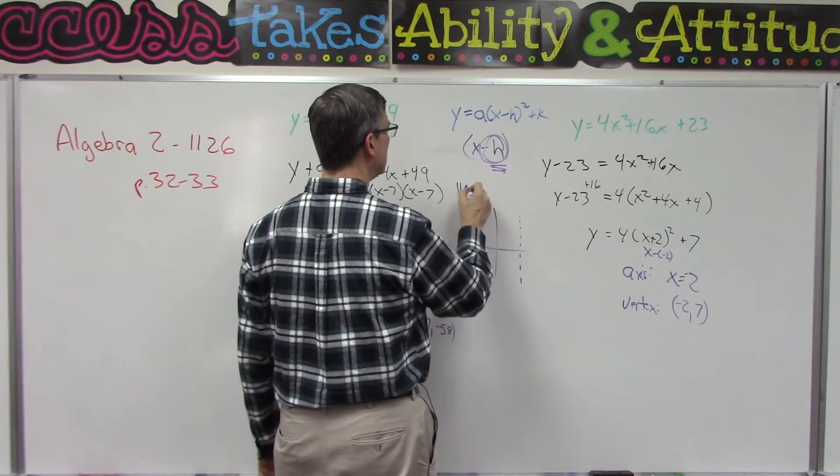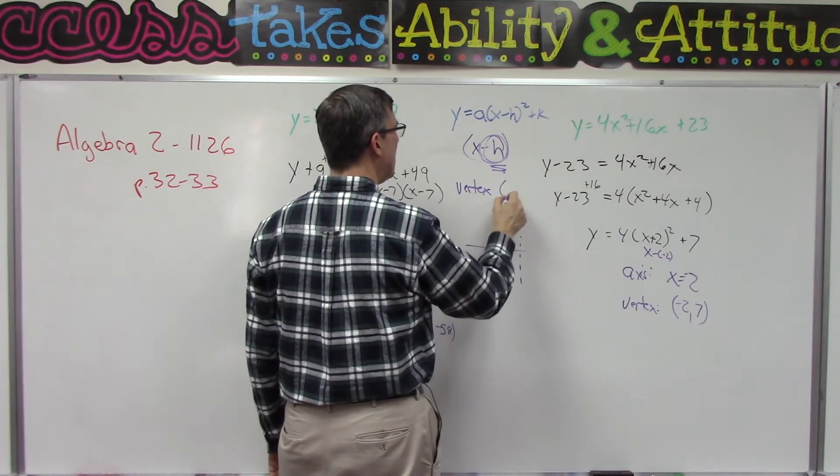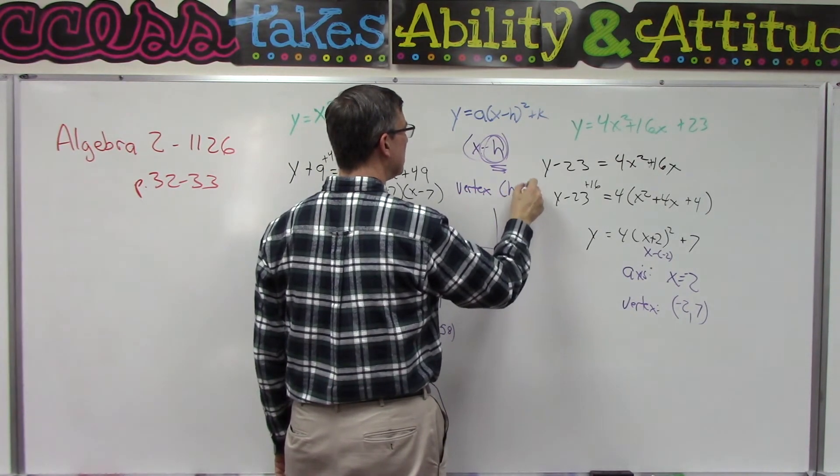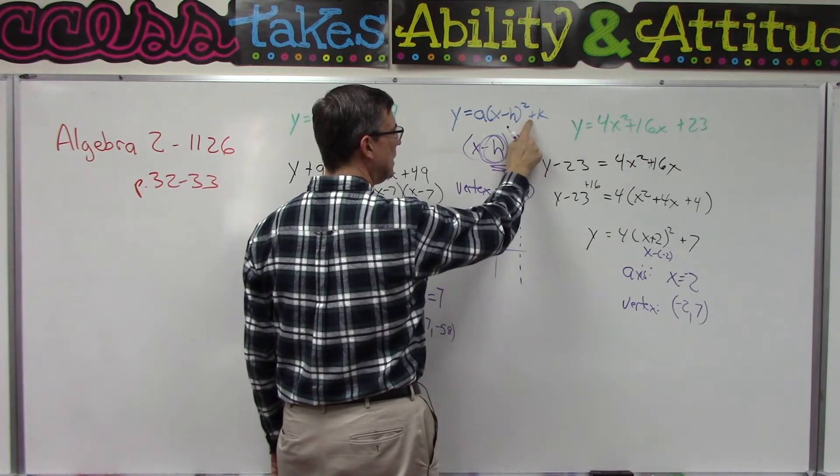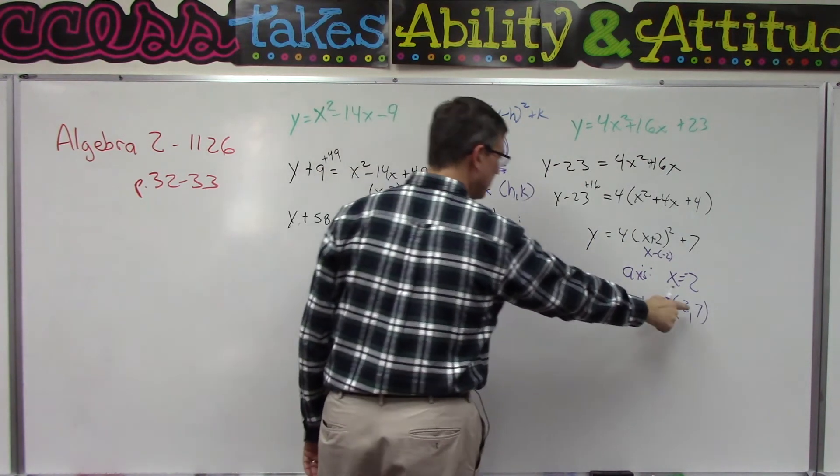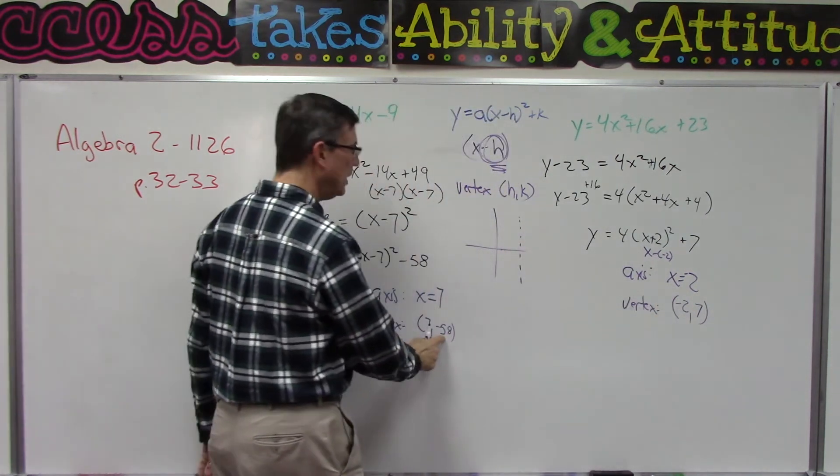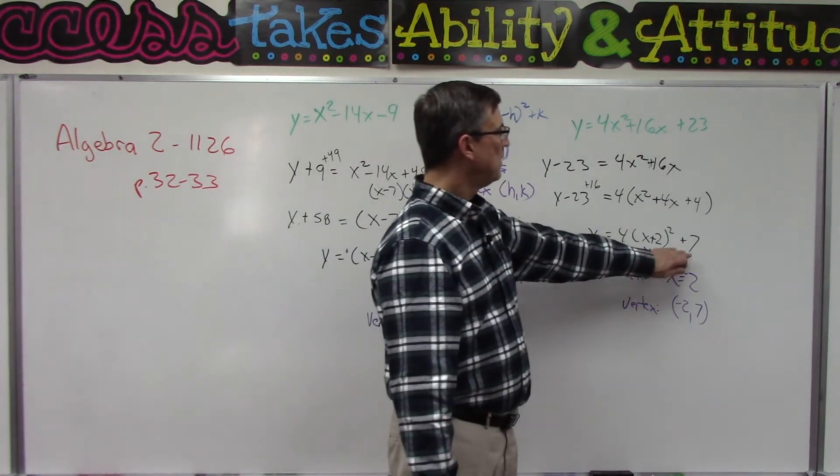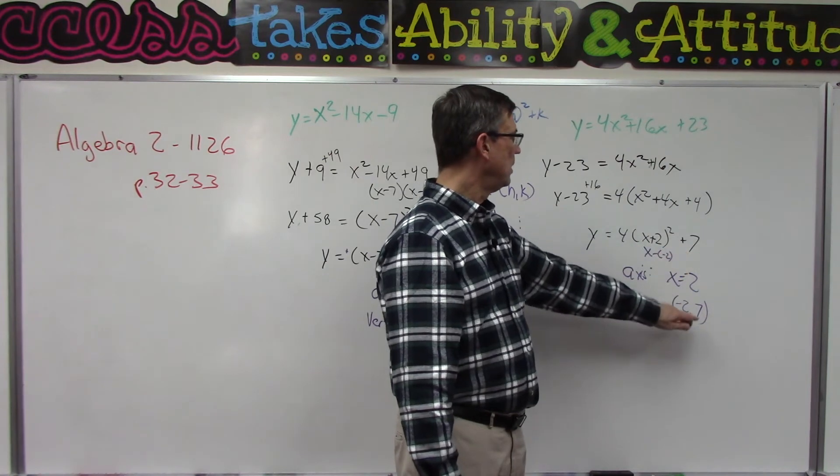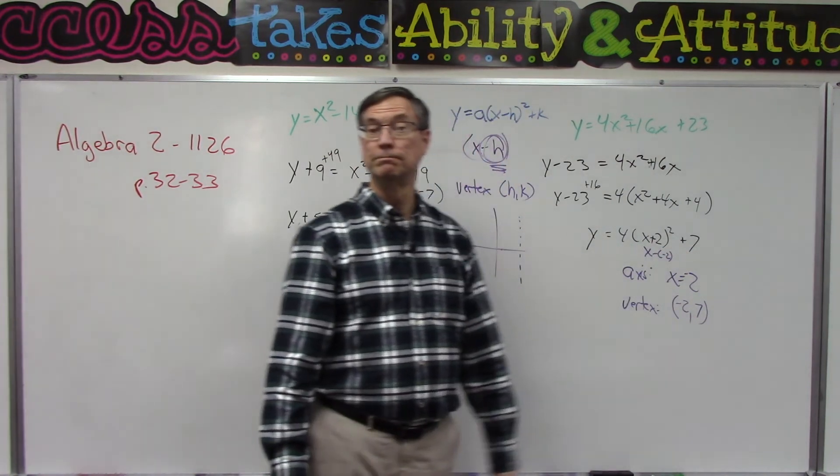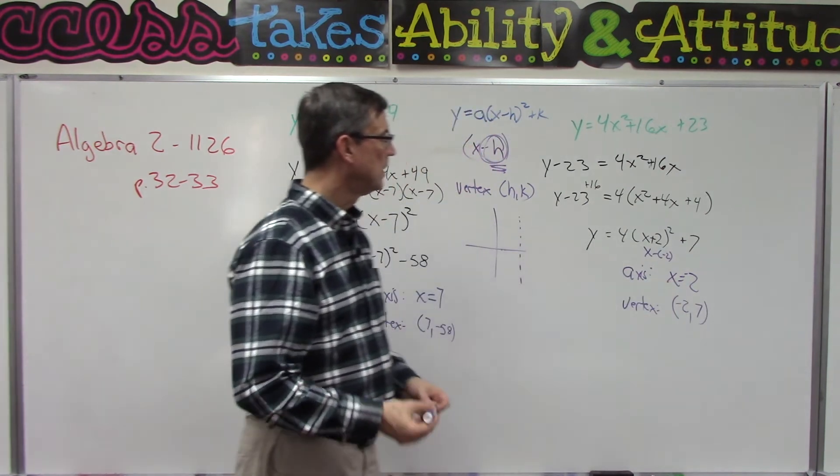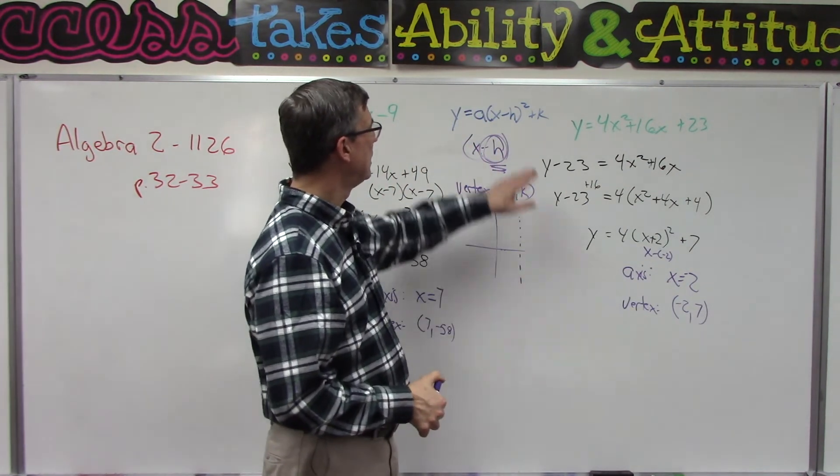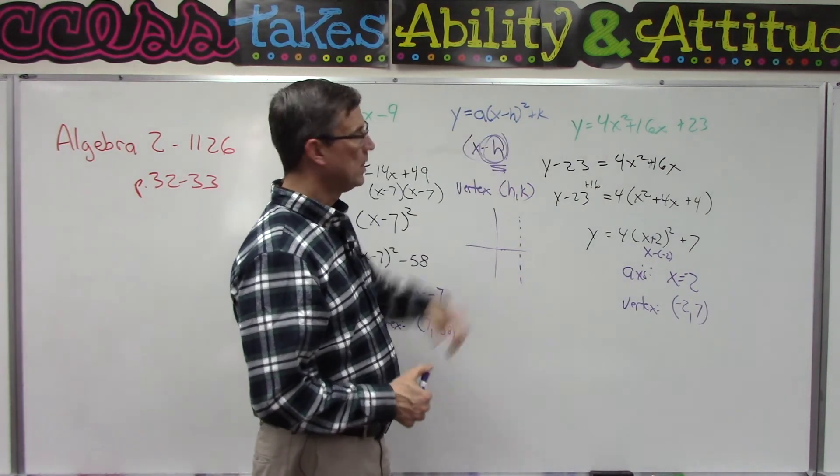So we could say that the vertex has the address H, K. Take the K value. If this was negative then that would be negative. If the K value works out to be positive as happened here then it's a positive value. The X value is always the same as the X axis which we found by inspecting this.